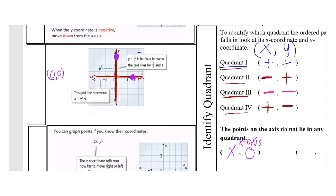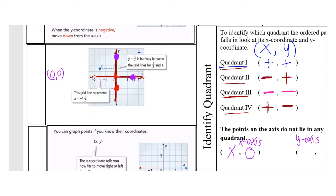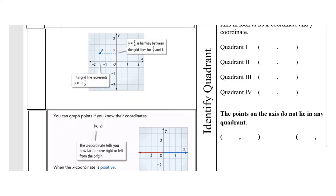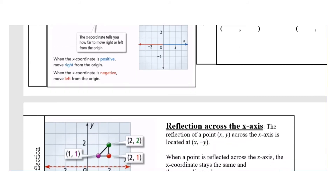If a point is on the y-axis, starting at origin (0, 0) you don't move left or right, so the x-coordinate is zero. You do move up or down, so you'll have a number for the y-coordinate. For example, a point at (0, -1) is on the y-axis — x-coordinate is zero, y-coordinate is negative one. Now let's talk about reflection. Turn to page 194.